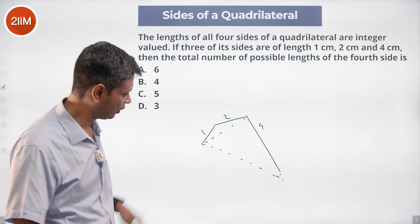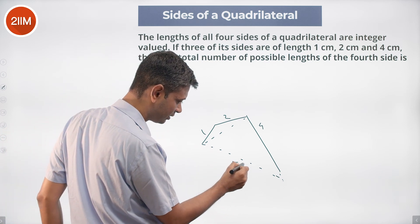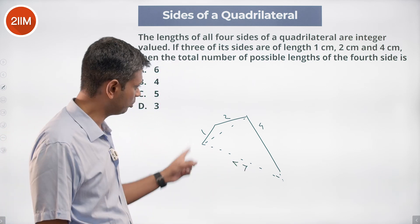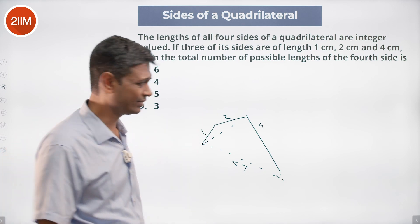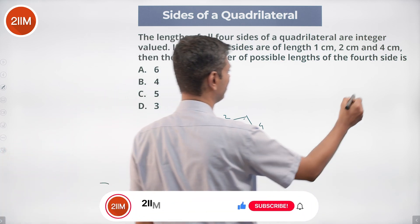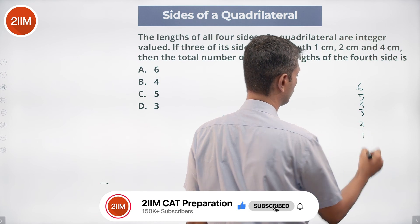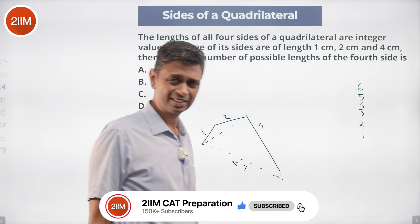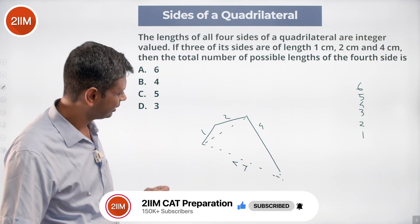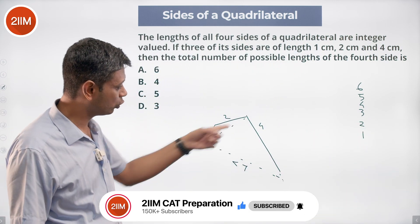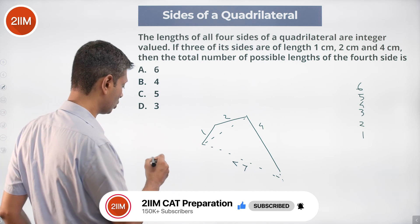So this fourth side should be less than 7, since 1 plus 2 plus 4 is 7. The fourth side must be less than 7, so it could be 6, 5, 4, 3, 2, or 1. Except we also need to keep in mind that the longer side could be 4, so we have to flip the equation the other way around.